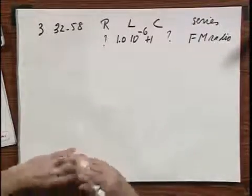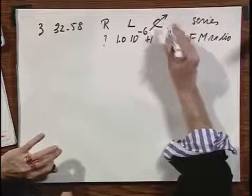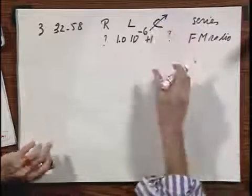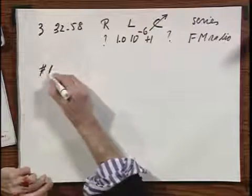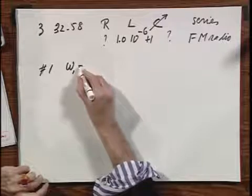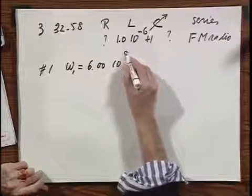It is an FM radio. I tune in on a broadcast by varying the capacitor. This arrow through the C means that the capacitor can be varied. I have broadcast station number one which broadcasts at an angular frequency of 6.00 times 10 to the 8 radians per second.